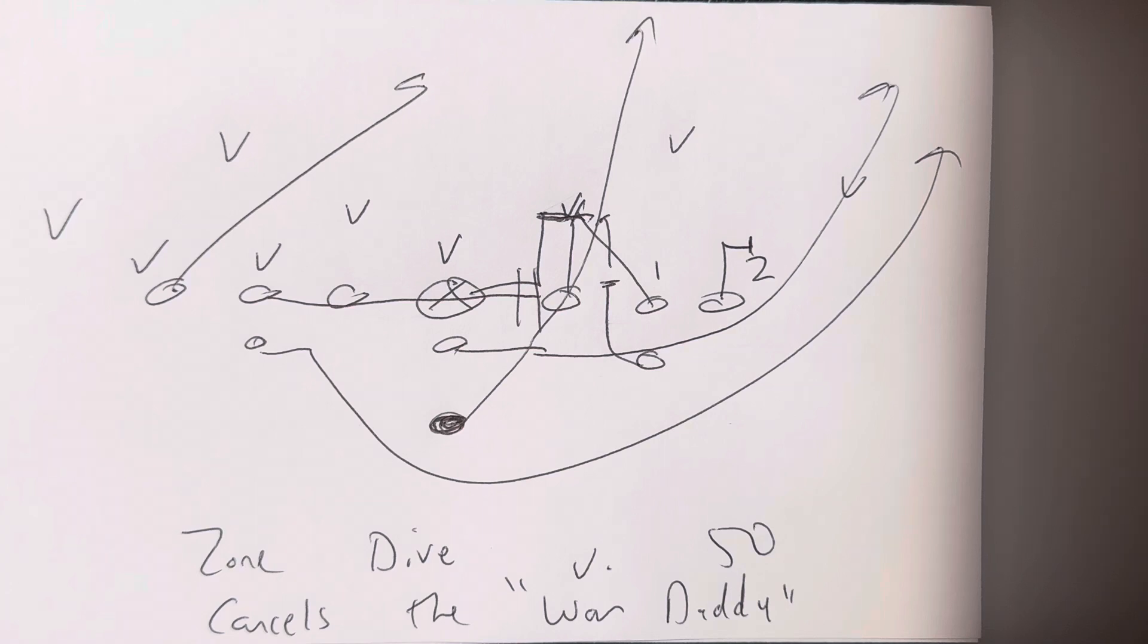So, it cancels the zero technique, or what was referred to as, by the great Todd Spencer, the war daddy, who was the guy that wrecked the inside veer, because he would wreck the center, number one would take the quarterback, and then they could not get inside veer going, because they couldn't control the mic.